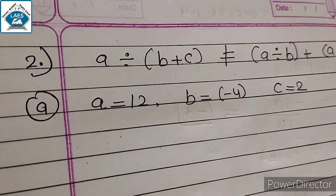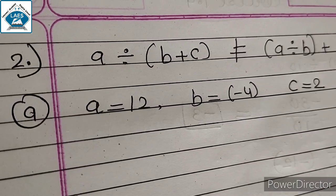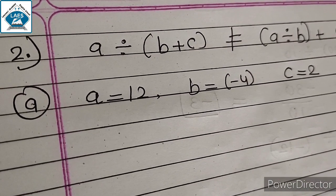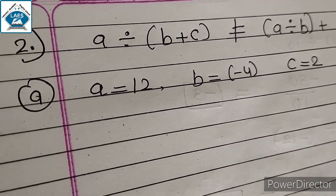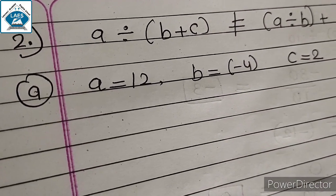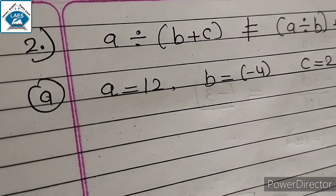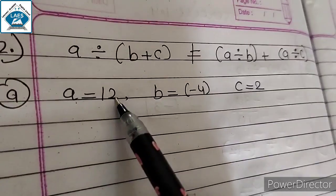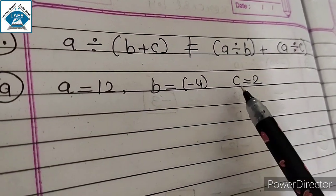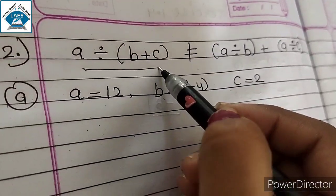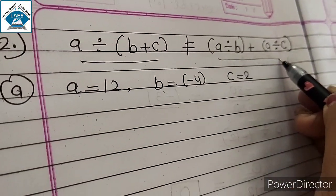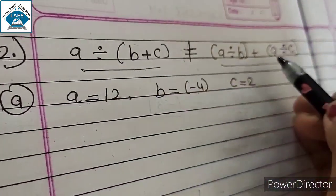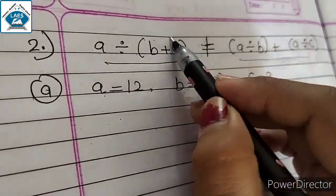Question number 2: verify that A divided by (B + C) is not equal to (A divided by B) plus (A divided by C) for the following values. यह हमारा left hand side and यह रहेगा हमारा right hand side. Not equals to means left hand side and right hand side दोनों का answer different आता है. Multiplication की properties में दोनों का answer same था, but division में यह possible नहीं है.